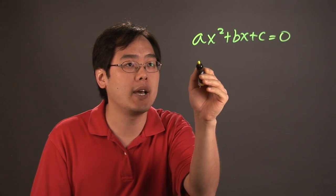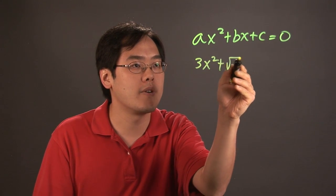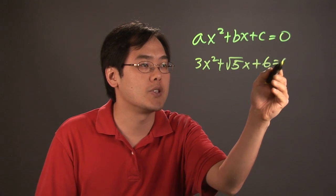So for example, if you have something like, let's just say 3x squared plus square root of 5x plus 6 equals 0.